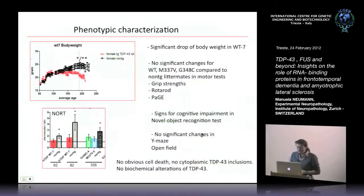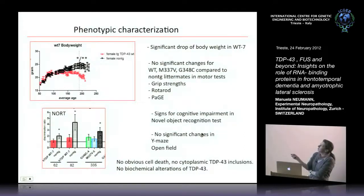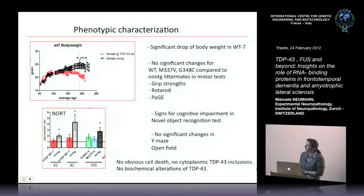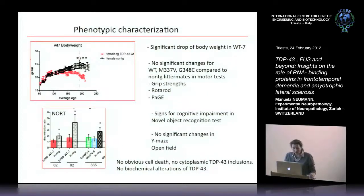Extensive phenotypic characterization showed that around three to five months, wild-type overexpressing mice show loss of body weight but no significant changes in motor tests or cognitive tests like Y-maze and open field. There is some evidence for slight cognitive impairment in novel object recognition. Overall, we don't see obvious cell death, cytoplasmic TDP accumulations, or biochemical alterations of TDP as seen in human patients — which was frustrating.